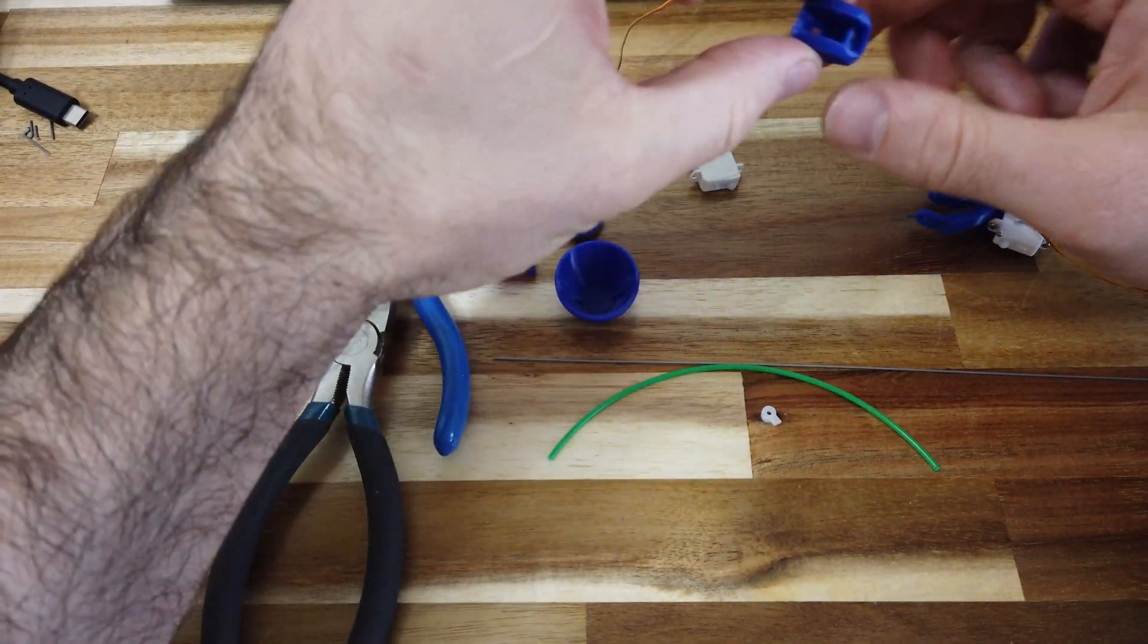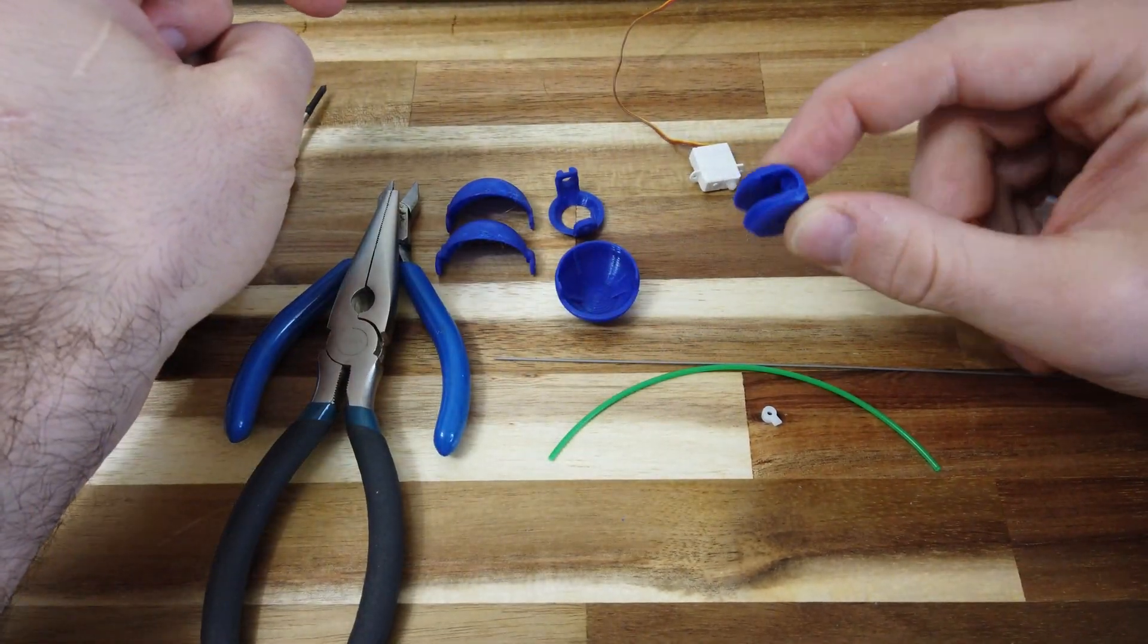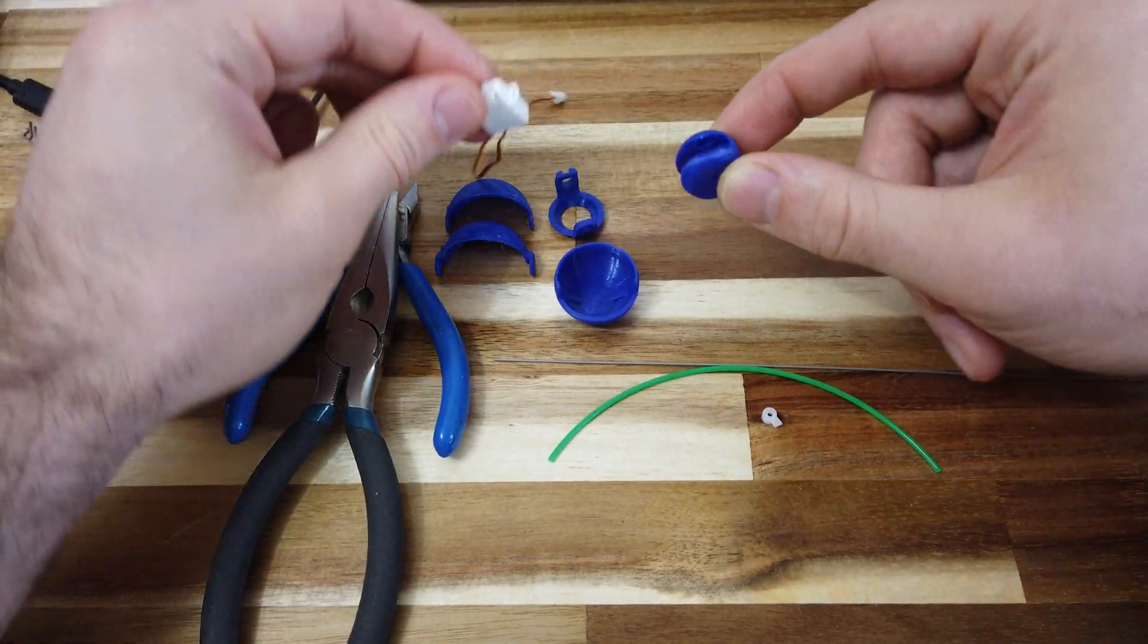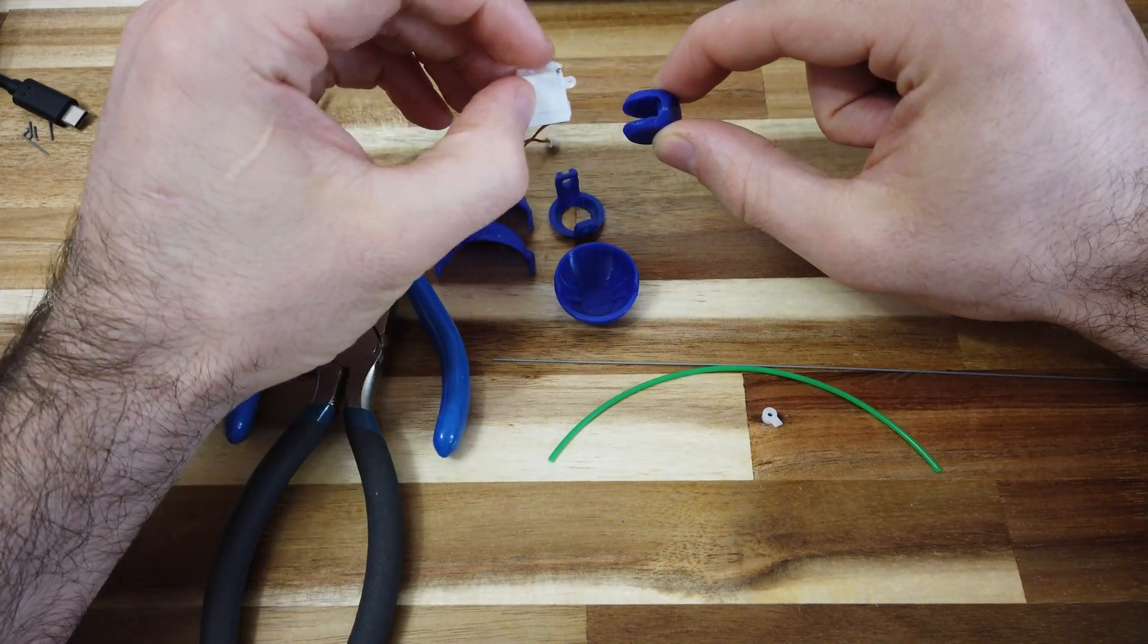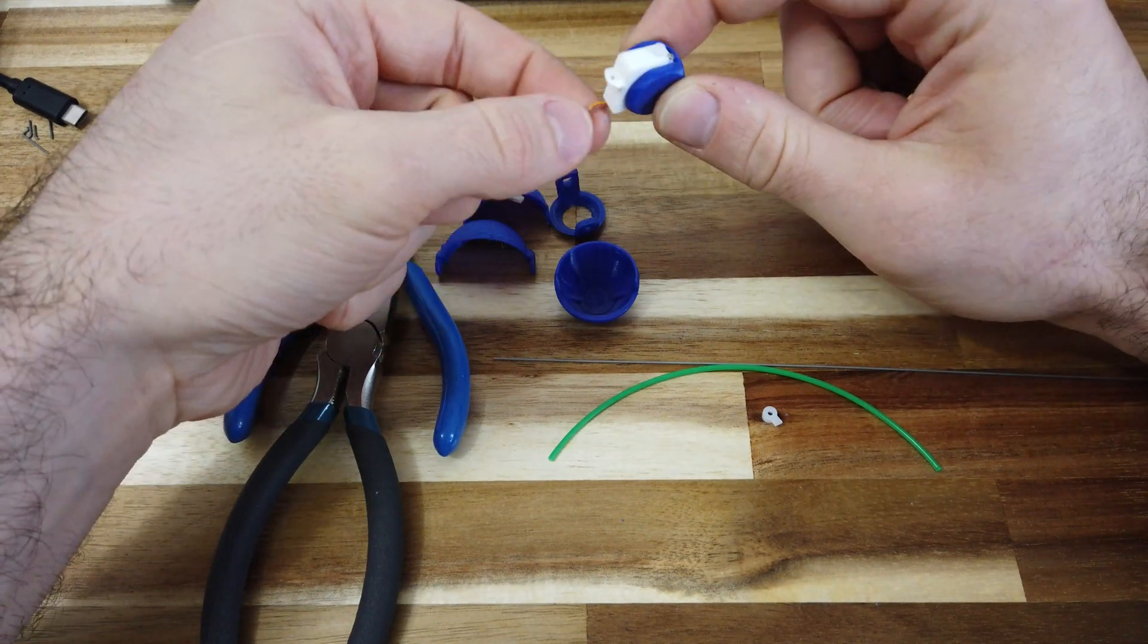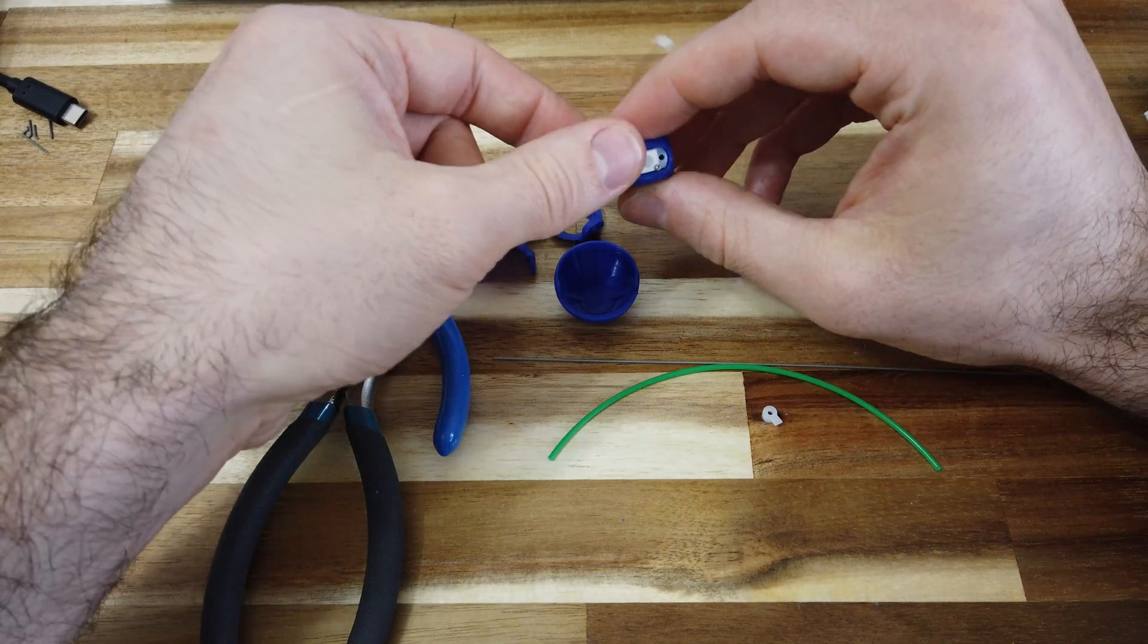So to start, you start with this, which is what I call the eye yoke, but it's the central part of the eye. This is what holds one of the servos and does the left-right up-down motion control. The servo nub goes forward in the pocket, and there are some channels in the bottom to manage the cables a little bit more effectively.